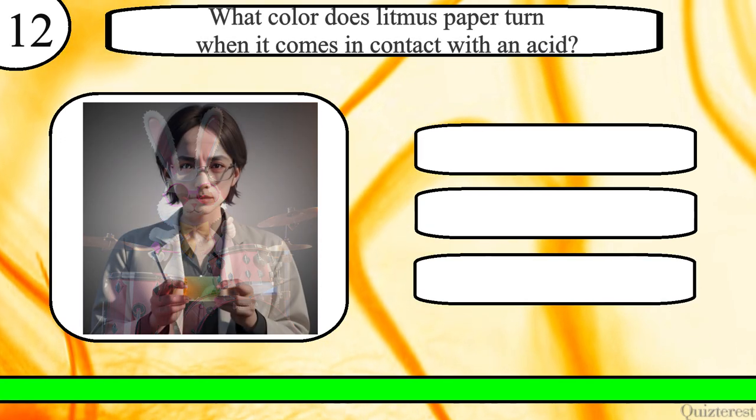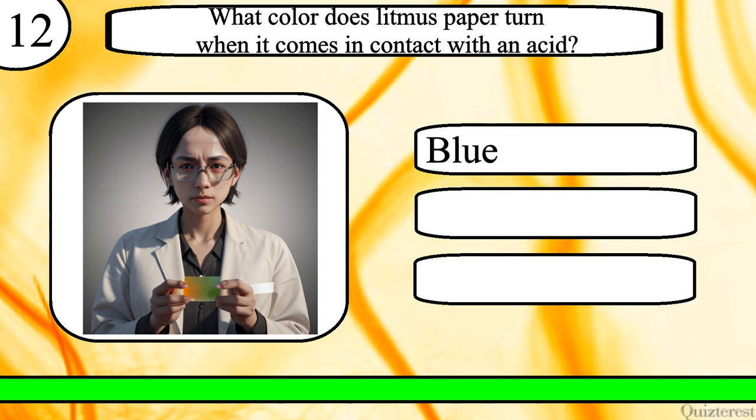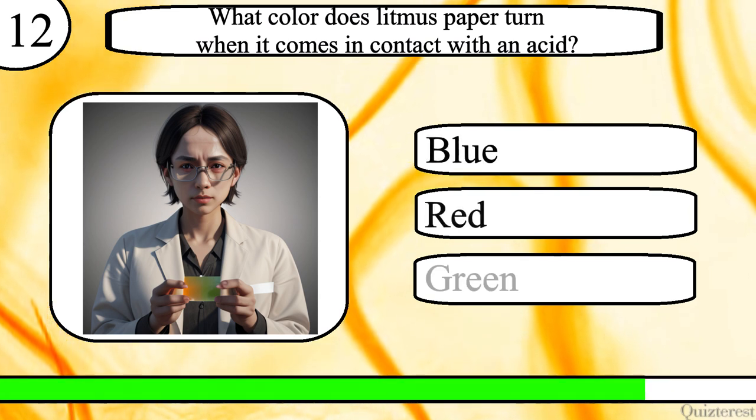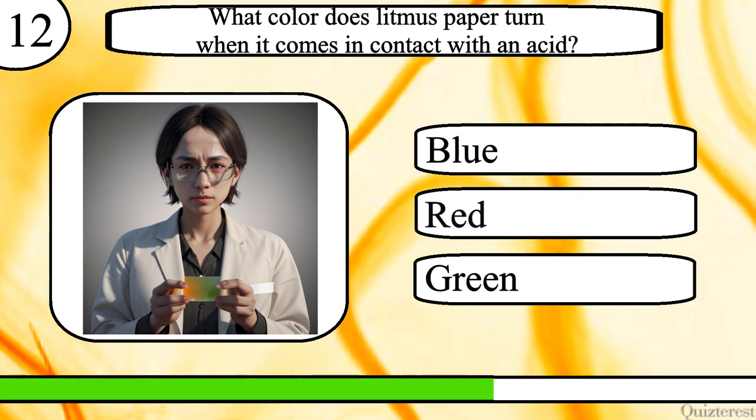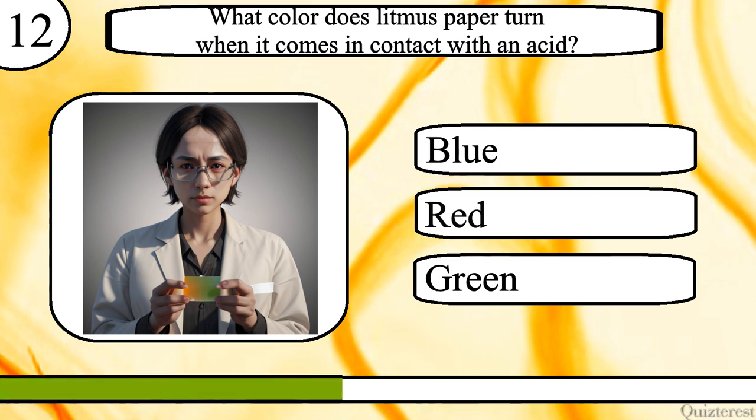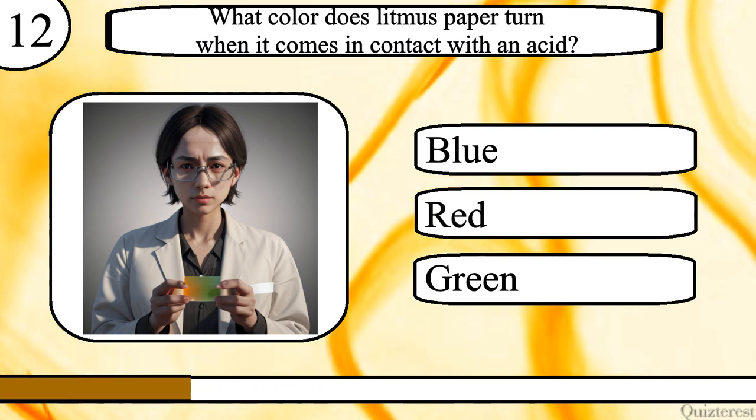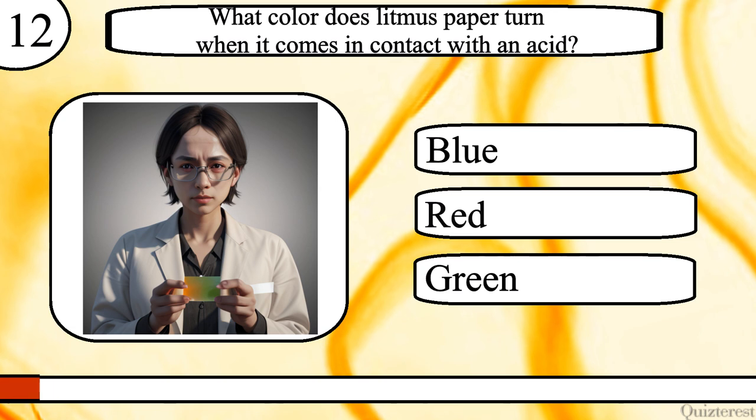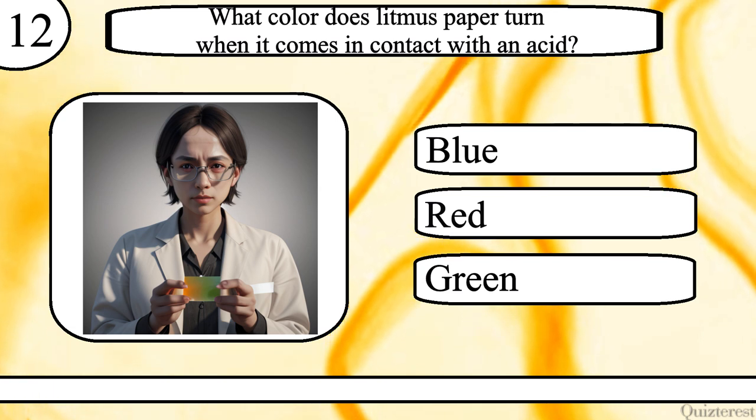Question 12. What colour does litmus paper turn when it comes in contact with an acid? Blue, red, or green? The correct answer is red.